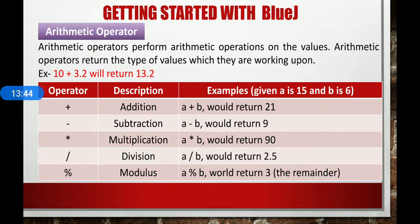Here are some arithmetic operators. The plus sign is for addition. For example, if the value of a is 15 and b is 6, then a plus b will return 21. The minus sign is for subtraction, so a minus b will return 9. The asterisk symbol is for multiplication, so a multiplied by b will return 90. The division slash is for division, so a divided by b will return 2.5. The modulus symbol is used for the remainder — a mod b means 15 mod 6 will return 3.